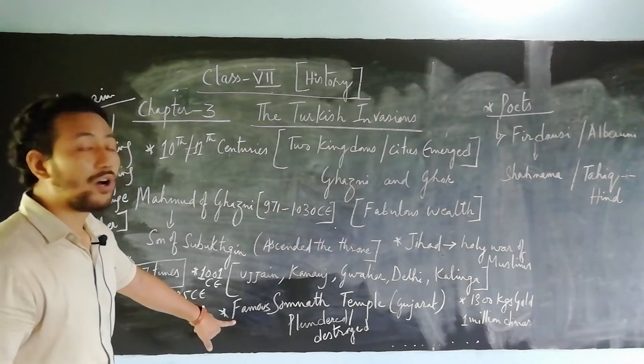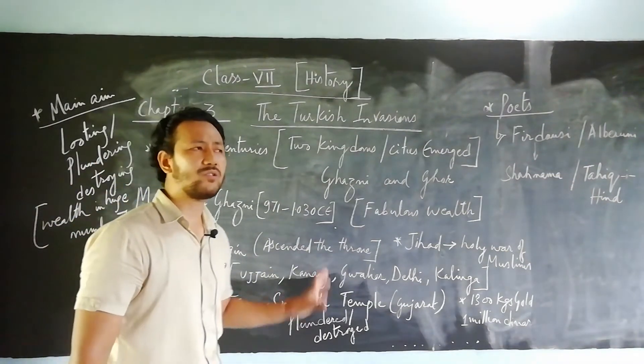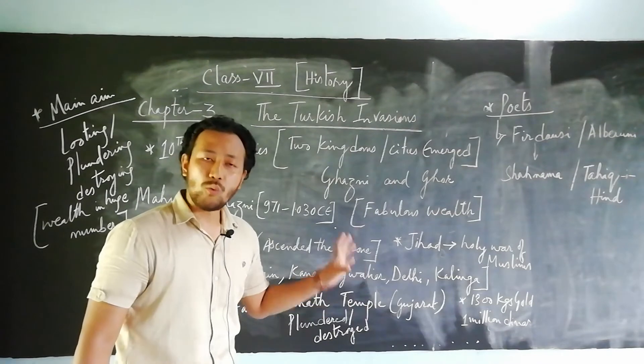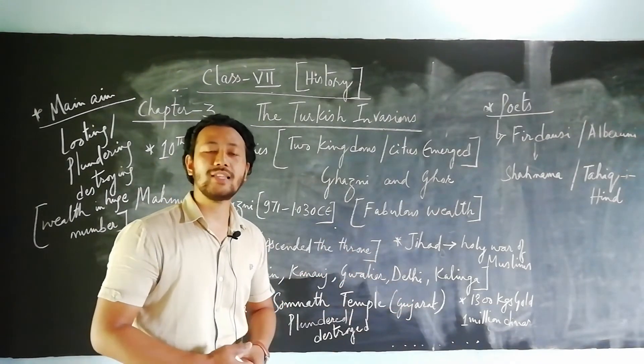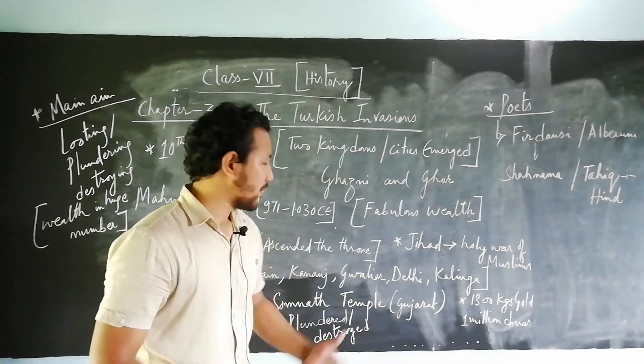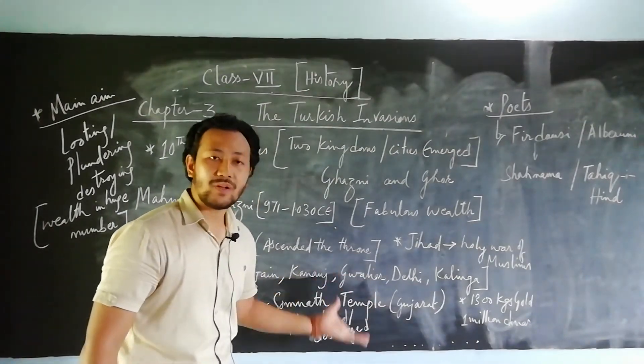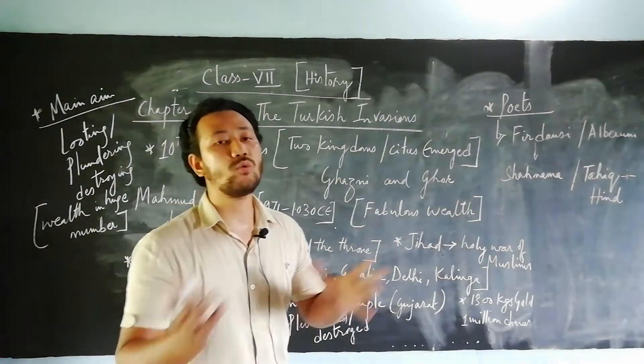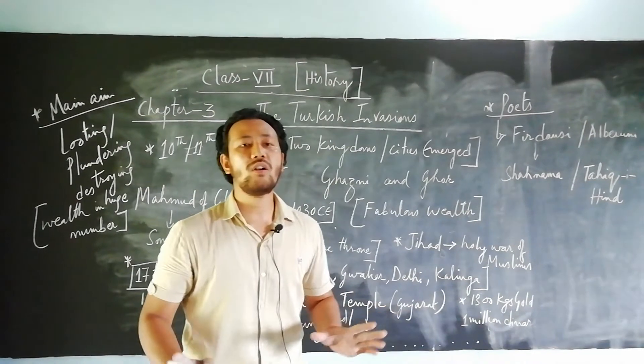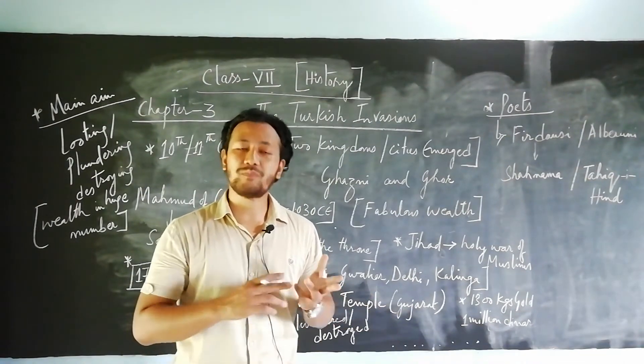Mohammed of Ghazni also destroyed and plundered the famous Somnath Temple, located in Gujarat with capital Gandhinagar. During those times, many Hindu kings wanted to revolt against Mohammed of Ghazni, but overall Mohammed of Ghazni was very powerful.